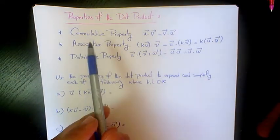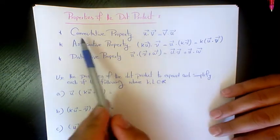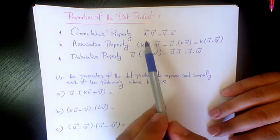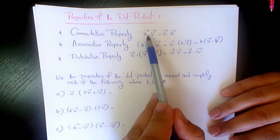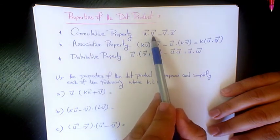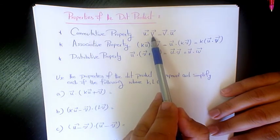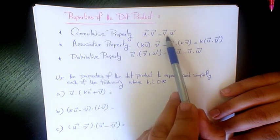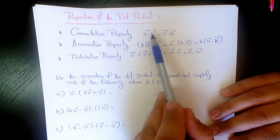We have three properties here. The first is the commutative property, which means that when we find the dot product of u and v, that's going to be equal to the dot product of v and u.